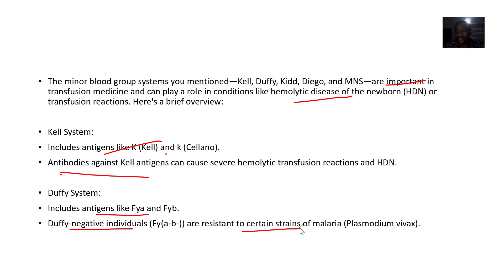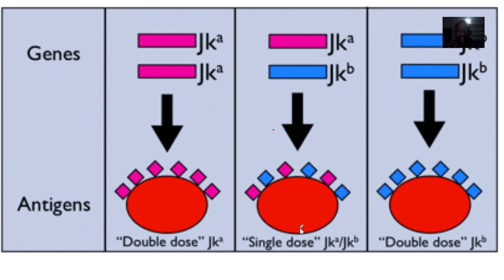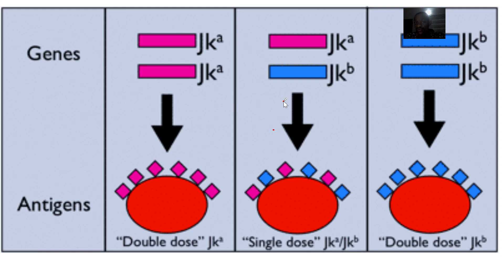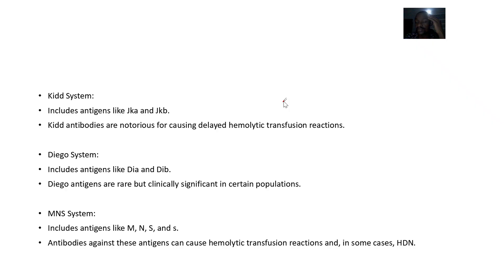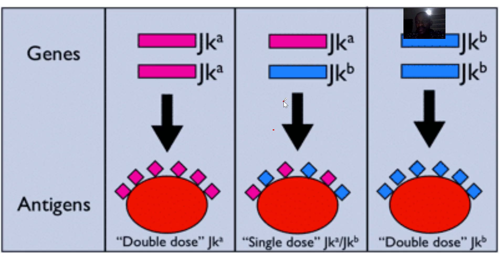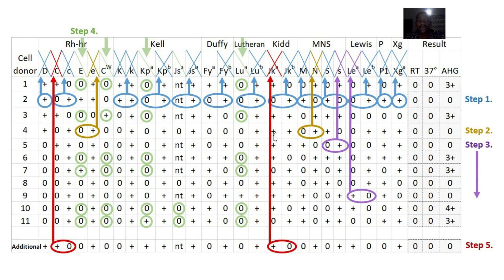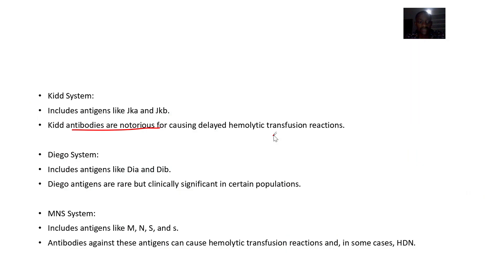Next is the Kidd system, which is composed of antigens JKA and JKB. The Kidd antibodies are notorious for causing delayed hemolytic transfusion reactions — they will indeed cause a transfusion reaction, but it takes time to manifest.